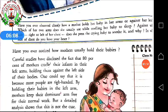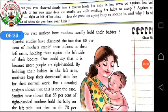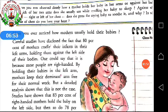Most people are right-handed; very few are left-handed. That's why they do all their household and other work with their right hand, and hold the baby on the left side instead. By holding their babies in the left arm, mothers keep their 'dominant' arm free for their normal work. 'Dominant' means having superior strength — that is, your main arm. For example, I am right-handed, so my dominant arm is my right arm, and that's why I hold my baby on the left side.